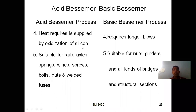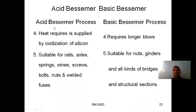In the acid Bessemer process, heat required is supplied by oxidation of silicon, and it requires longer blows. It is suitable for making rails, axles, springs, wire screws, and wires. The basic Bessemer process is suitable for nuts, grinders, bridges, and structural sections. These are the differences between the acid and basic Bessemer processes — very important for examinations.